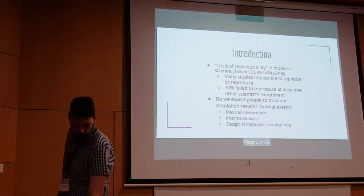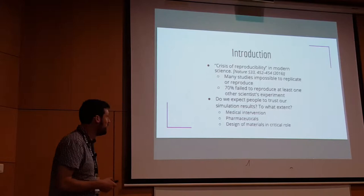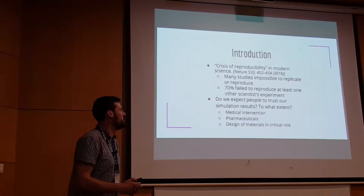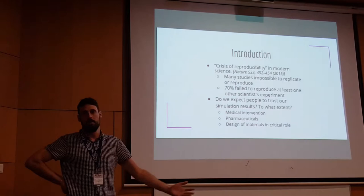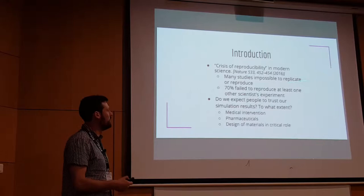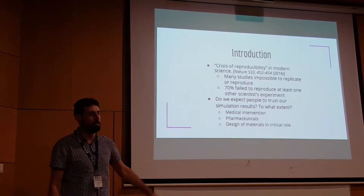It's fashionable these days to talk about the crisis of reproducibility in modern science. This often refers to a Nature survey where they asked maybe 1,500 scientists if they could reproduce other scientists' results, or even their own. The surveys suggest around 70% said they couldn't reproduce at least one other scientist's experiment, and 50% couldn't reproduce one of their own, which is obviously more serious.